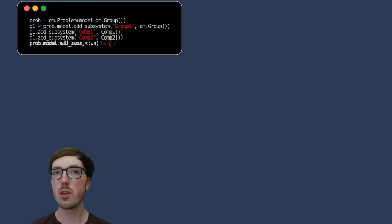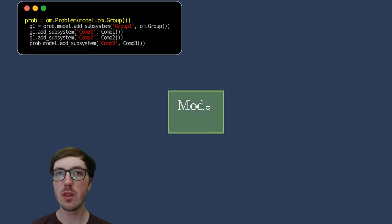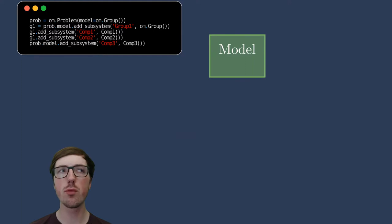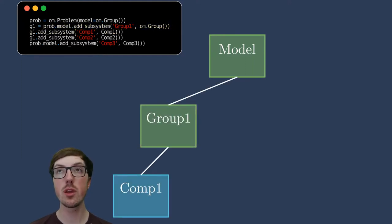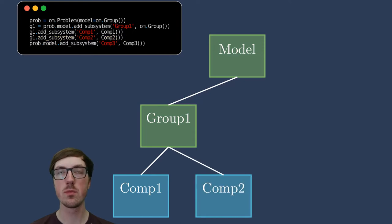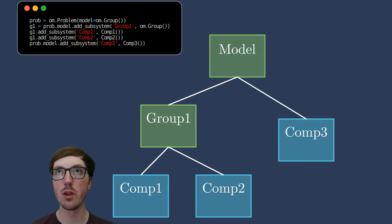Another way to arrange three components here instead of a flat way is to have components one and two live within a group. Then this group can live within the model level and component three can also live at that model level. You can have any kind of heterogeneous hierarchy that you want. If it helps you organize and understand and share your model, it's a great idea to use it.